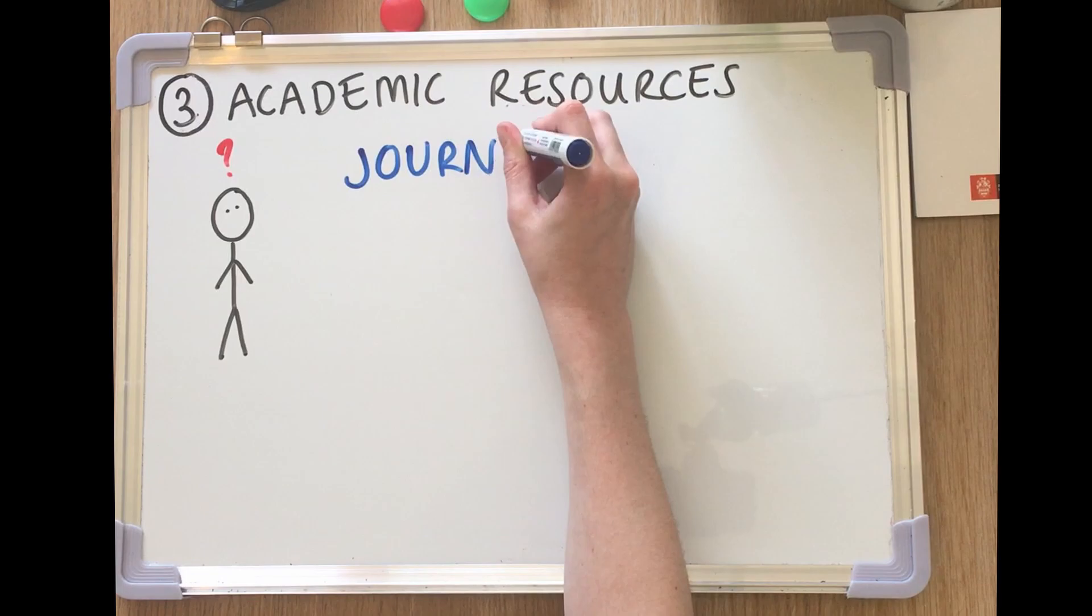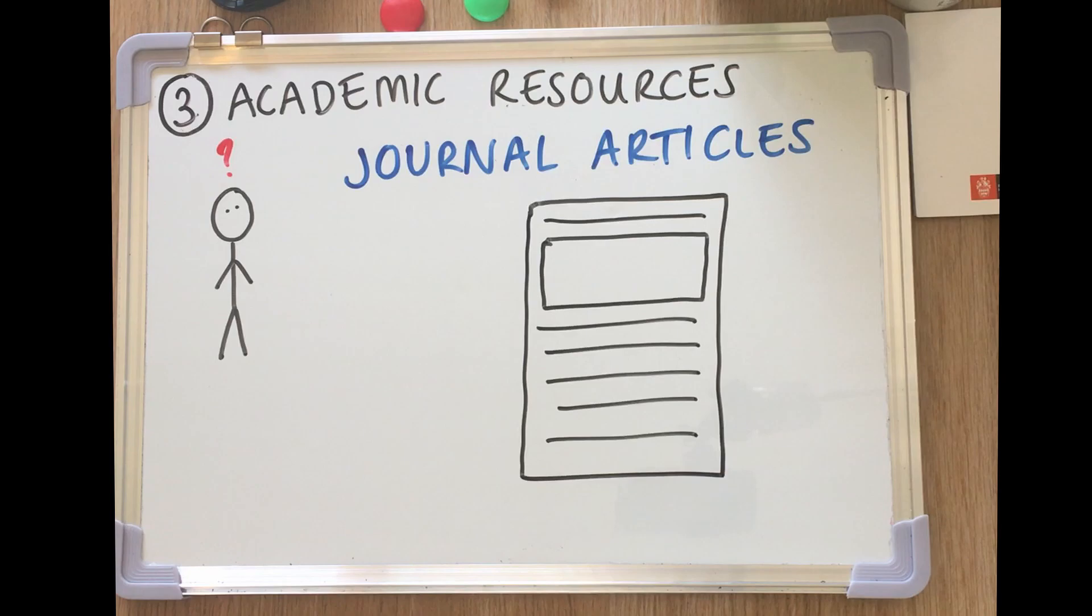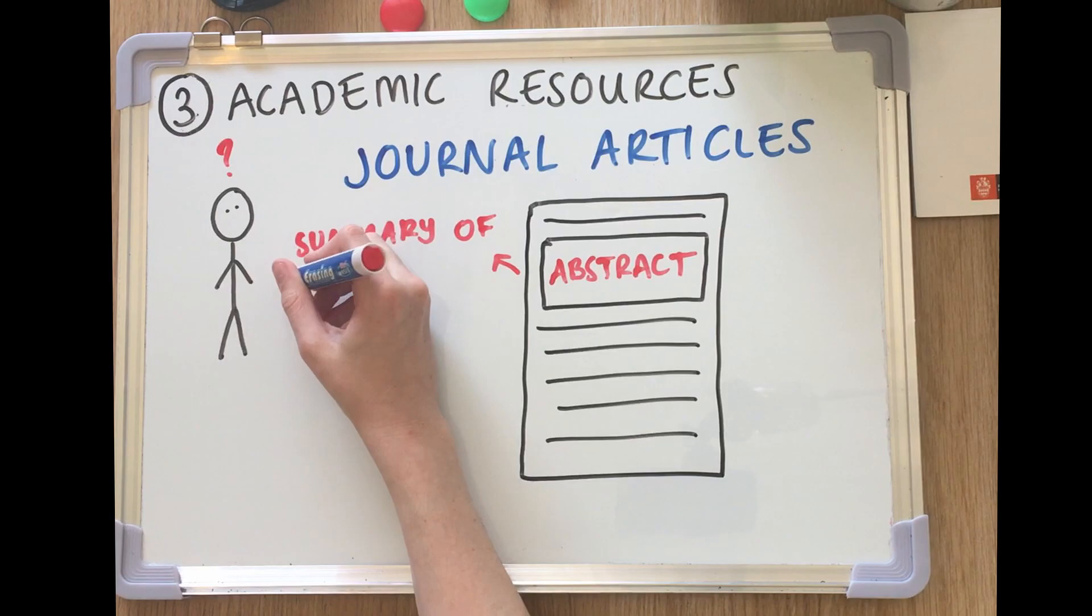Journal articles can be really great up-to-date, concise sources of information. Learn to use the abstract of a journal article which can be a useful summary of the entire article.